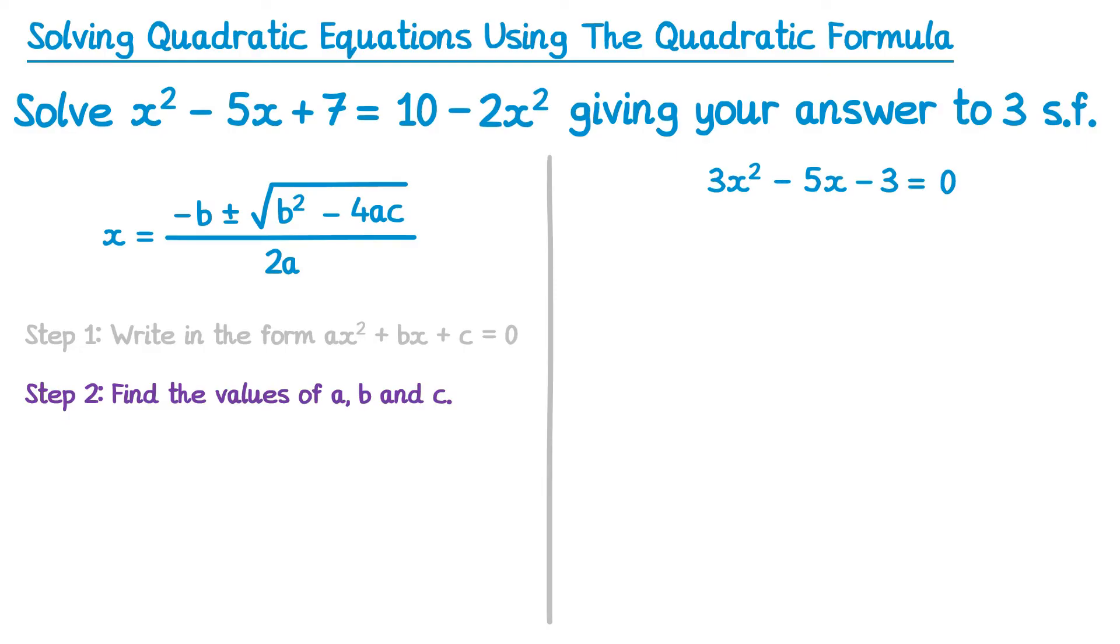Step 2, find the values of a, b and c. We can see a is 3, b this time is negative, negative 5, and c is also negative, negative 3.